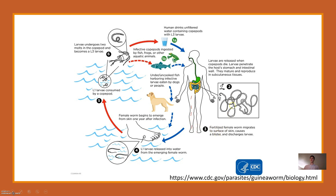Eventually, when it's time for the worm to exit your body, it'll cause a blister and then exit through the blister. It emerges from the blister, which is very painful, so people frequently put their feet — or whatever extremity, generally a lower extremity — into cool water. The worm will escape and release hundreds of thousands of larvae into the water, which will be consumed by the copepods and once again end up in drinking water. Sometimes aquatic animals like fish and frogs will consume them, and if humans or dogs eat uncooked fish with these infected copepods, it can also be transmitted that way.